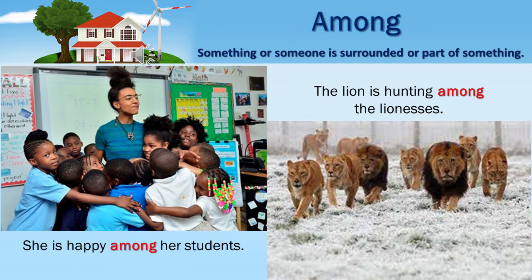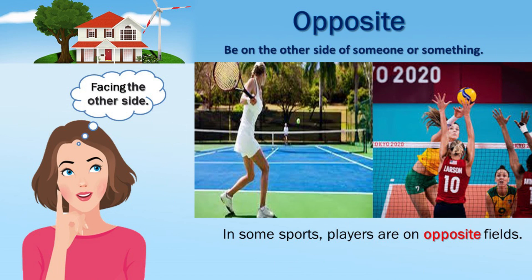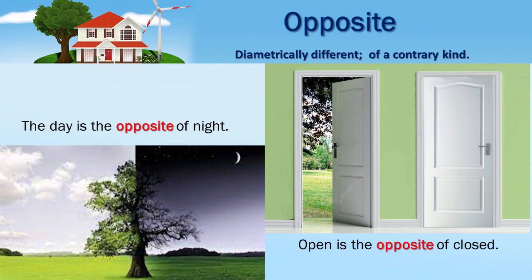Among: something or someone is surrounded by or part of something. She is happy among her students. The lion is hunting among the lionesses. Opposite — be on the other side of someone or something. In some sports, players are on opposite fields. Opposite — diametrically different, of a contrary kind.